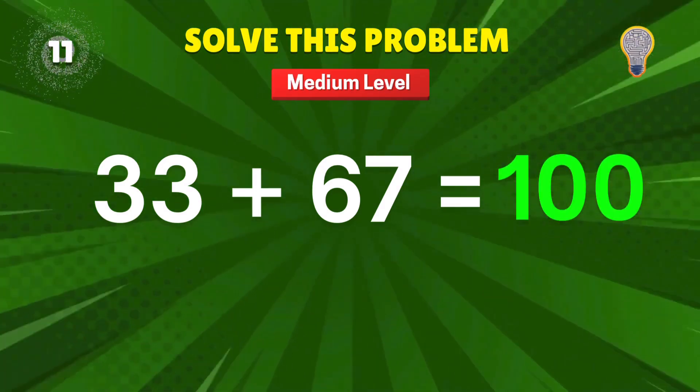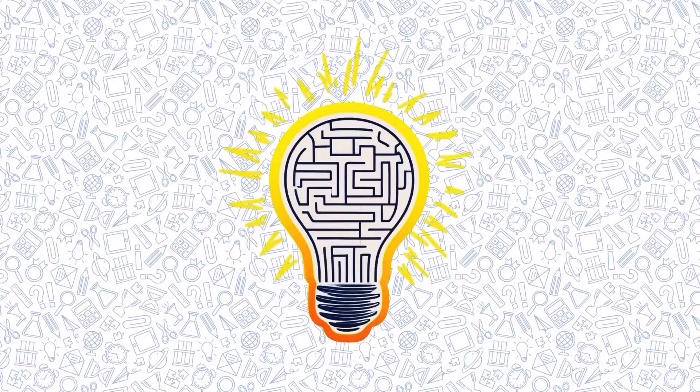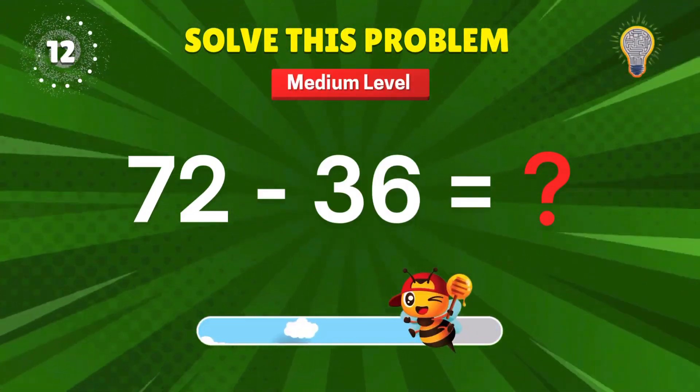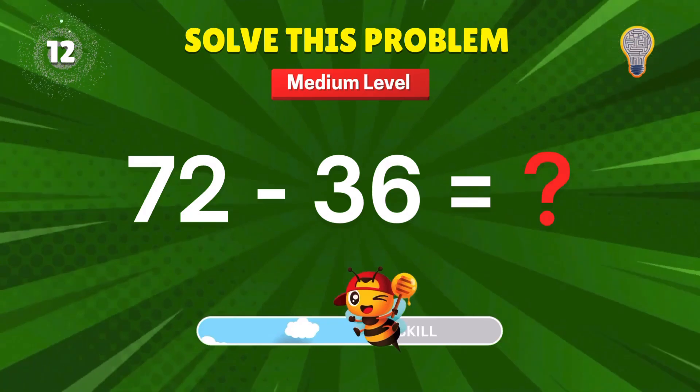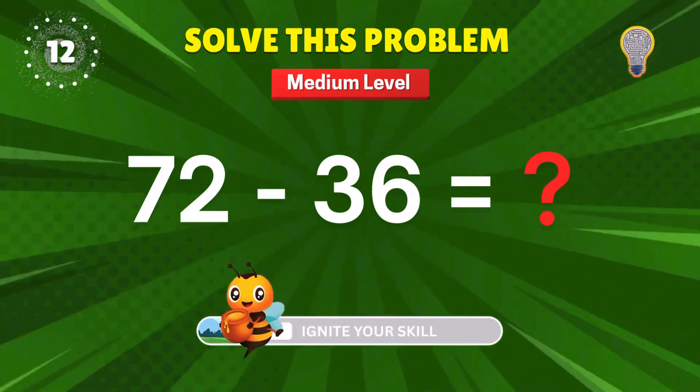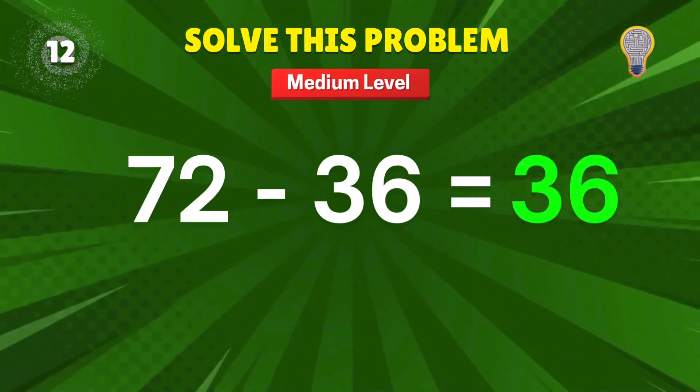100. Century. Raise your bat and score a point. 72 minus 36. Slice it right down the middle. 36. Spot on. Add that point.